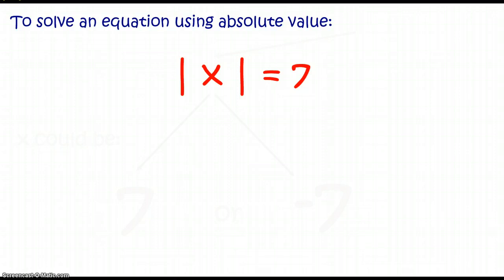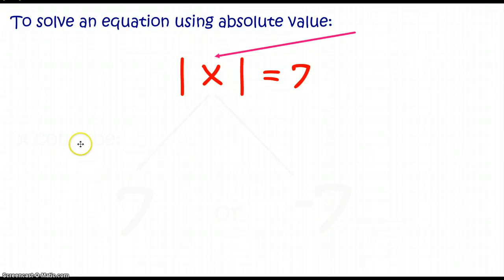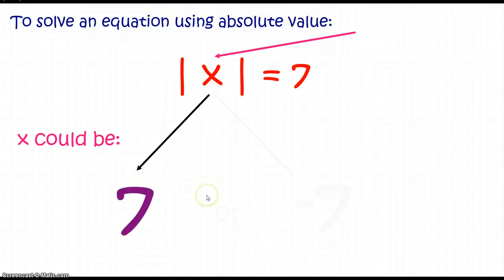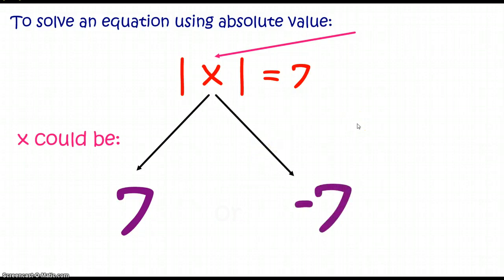An absolute value equation has the variable inside the absolute value symbol. Ask yourself: the absolute value of what number is equal to 7? There are two possible answers. X could have a value of 7, or if we go to the other side of the number line, X could also have a value of negative 7.